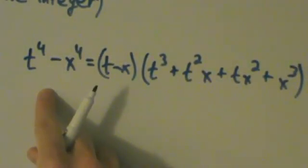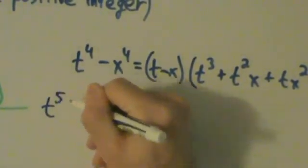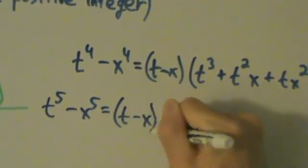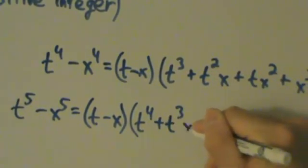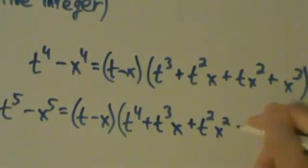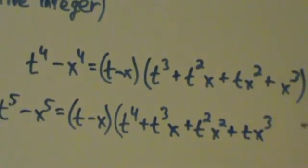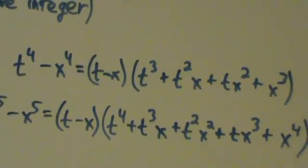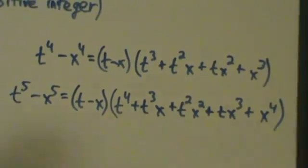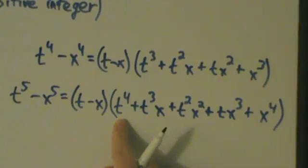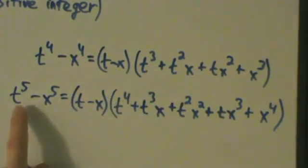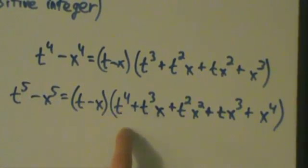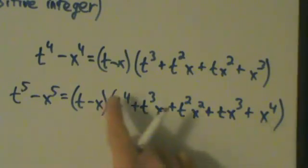Let's do one more specific case: t to the fifth minus x to the fifth equals, pulling out a t minus x, what we're going to have is t to the fourth plus t cubed x plus t squared x squared plus t x to the third plus x to the fourth. So you can see a pattern start to emerge here. If you pull out a t minus x, then what you have in parentheses starts at t to the power that's one less than the original power. The powers of t decrease by one while the powers of x increase by one.